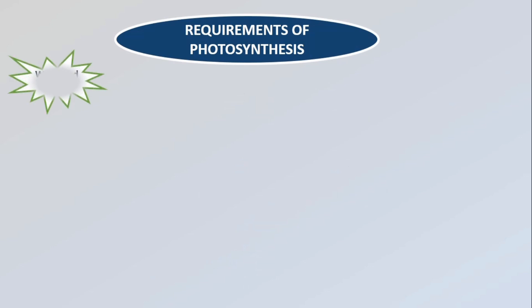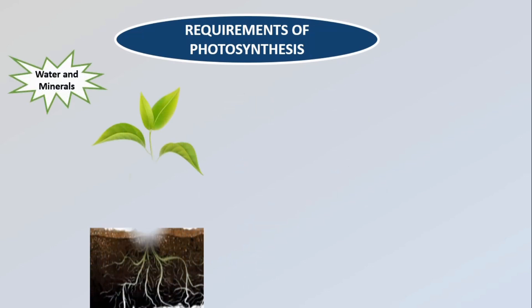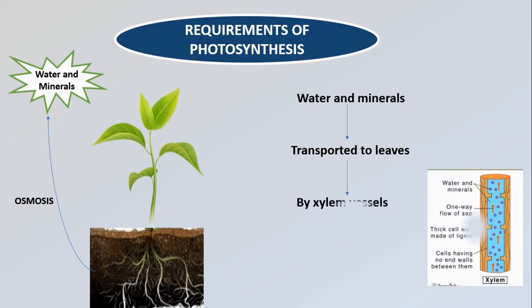The first requirement is water and minerals. Water and minerals are absorbed by the roots from the soil through osmosis. Water and minerals are transported to the leaves and other parts by xylem vessels which run like pipes throughout the root, stem, branches and leaves. They form a continuous path for the water and minerals to reach the leaves.